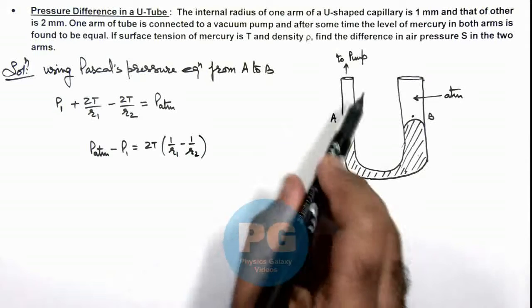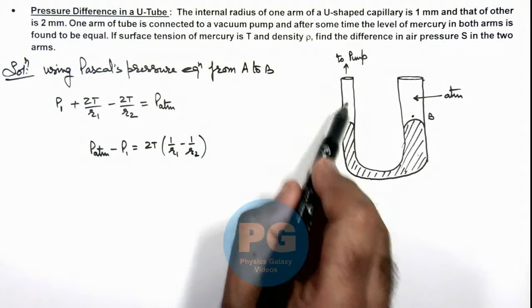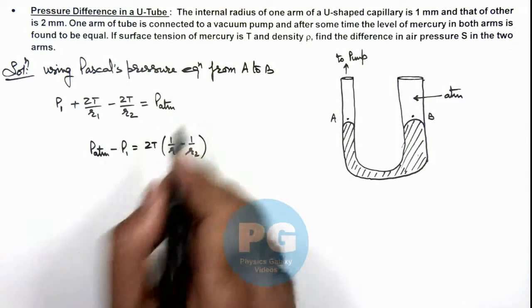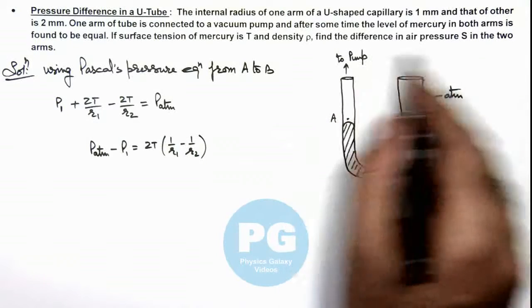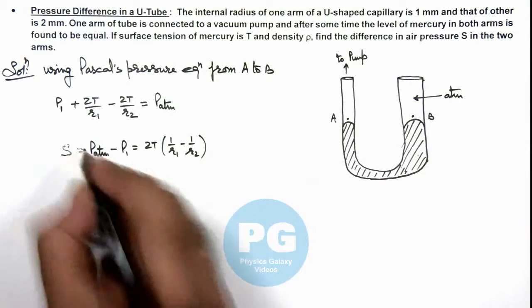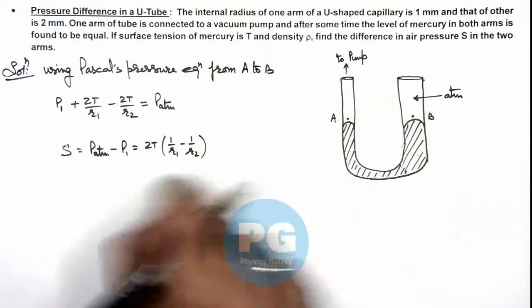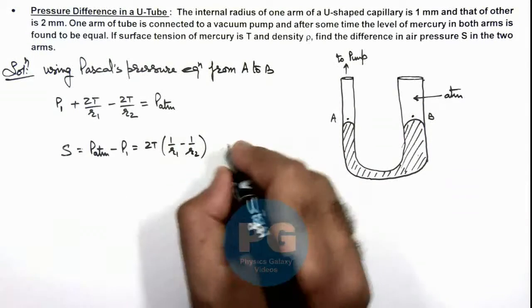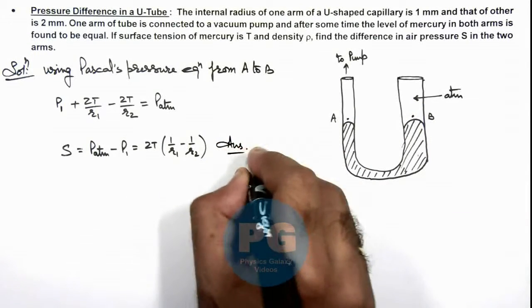Practically, if the pump will be able to create a vacuum over here, P₁ we can take as zero. But we are required to find the difference in air pressure, which on the two sides can be directly given by this relation, which is the result of this problem.